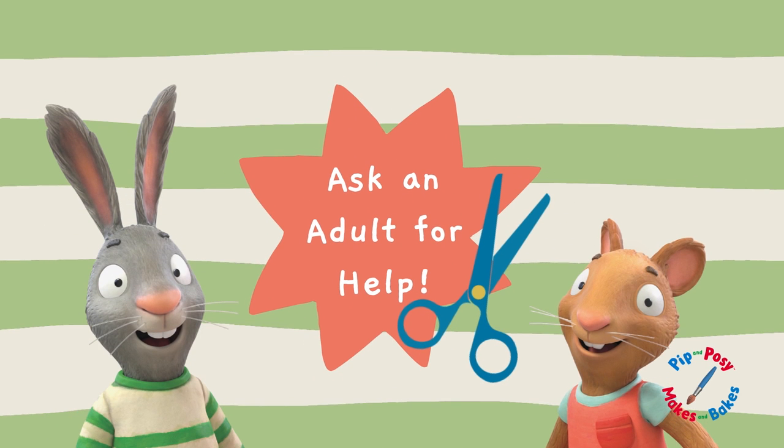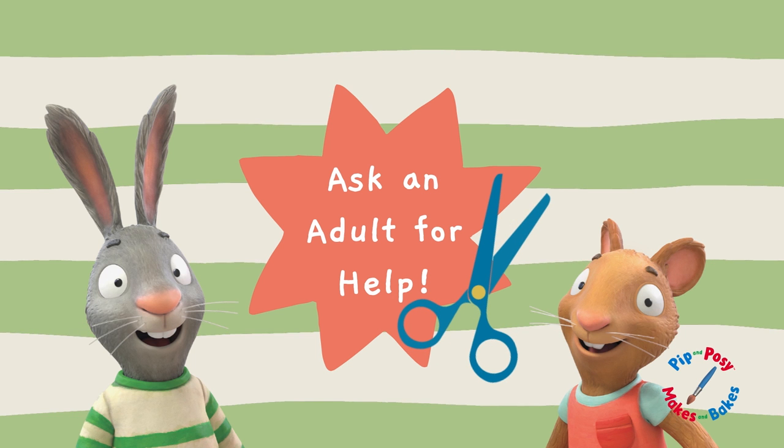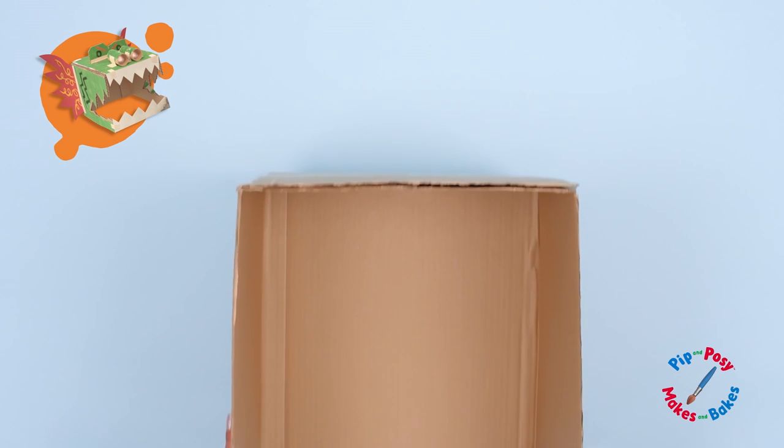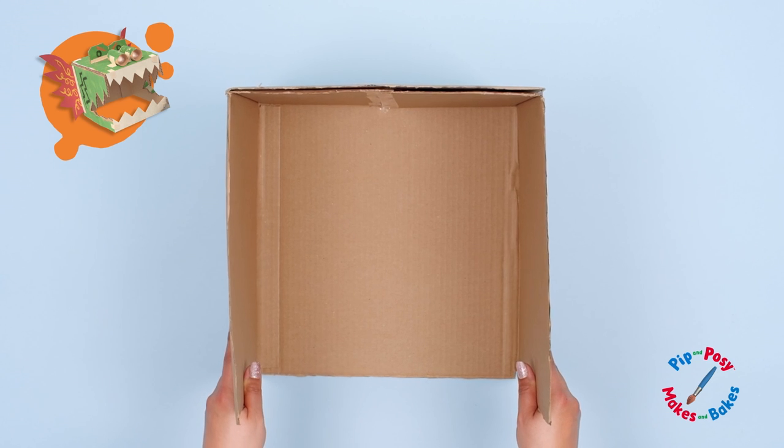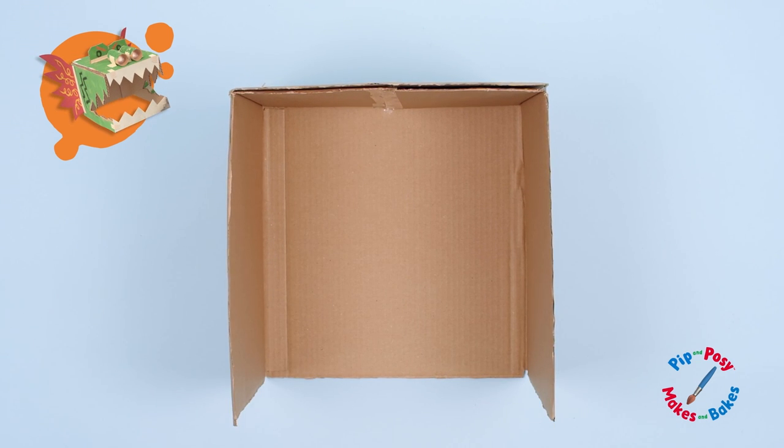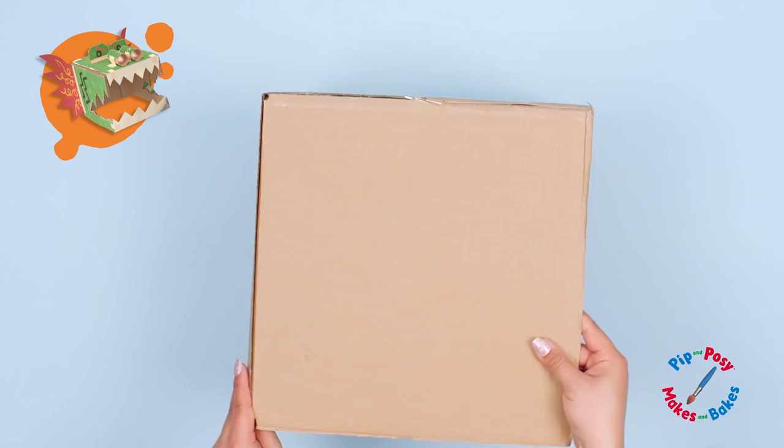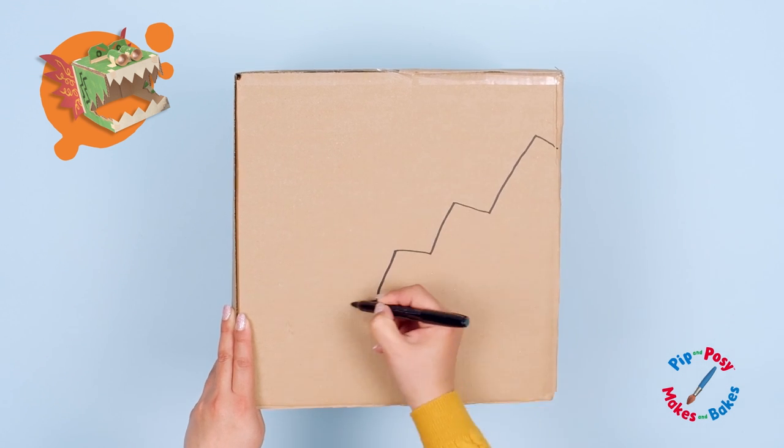Remember, always ask an adult to help you with scissors. Now we're ready to give the dragon some teeth. The dragon will be doing lots of roaring and breathing fire, so we'll give it a big open mouth. Draw the dragon's mouth on both sides of the box like this.